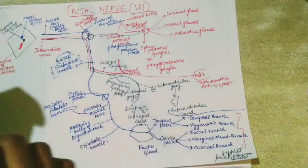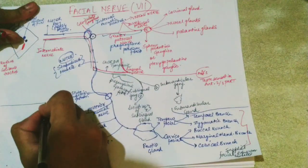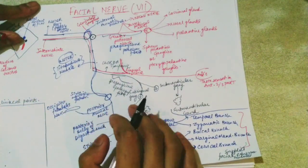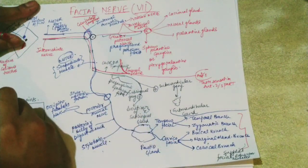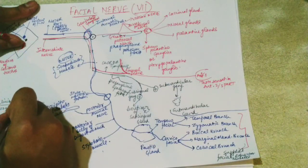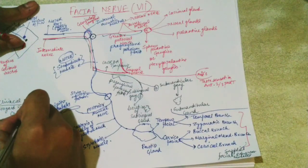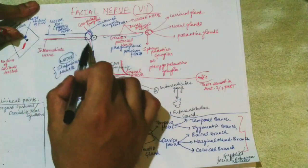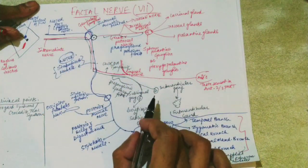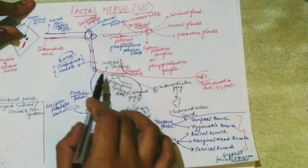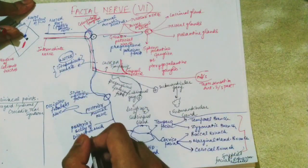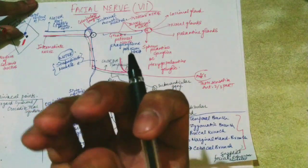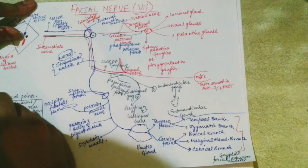Now we discuss a clinical point: a syndrome called Borgard syndrome, also called crocodile tear syndrome. This occurs when injury to the facial nerve causes the fibers that normally supply the submandibular and sublingual ganglia to regenerate abnormally. After regeneration, instead of supplying the sublingual and submandibular glands, the fibers go to the greater petrosal nerve and supply the lacrimal gland. Due to this, while you eat, tears fall from your eyes along with normal saliva secretion.